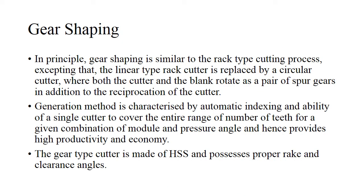Gear shaping is similar to the rack type cutting process, except that instead of a linear type rack cutter, here we have a circular cutter. Both the blank and the cutter rotate as a pair of spur gears, in addition to the reciprocation of the cutter. The cutter will not just rotate but will also have a reciprocating motion — it will go up and down. This is one of the generation method processes, characterized by automatic indexing. A single cutter can cover the entire number of teeth for a given combination of module and pressure angle, hence productivity is higher. The cutter is made up of HSS and possesses proper rake and clearance angles.